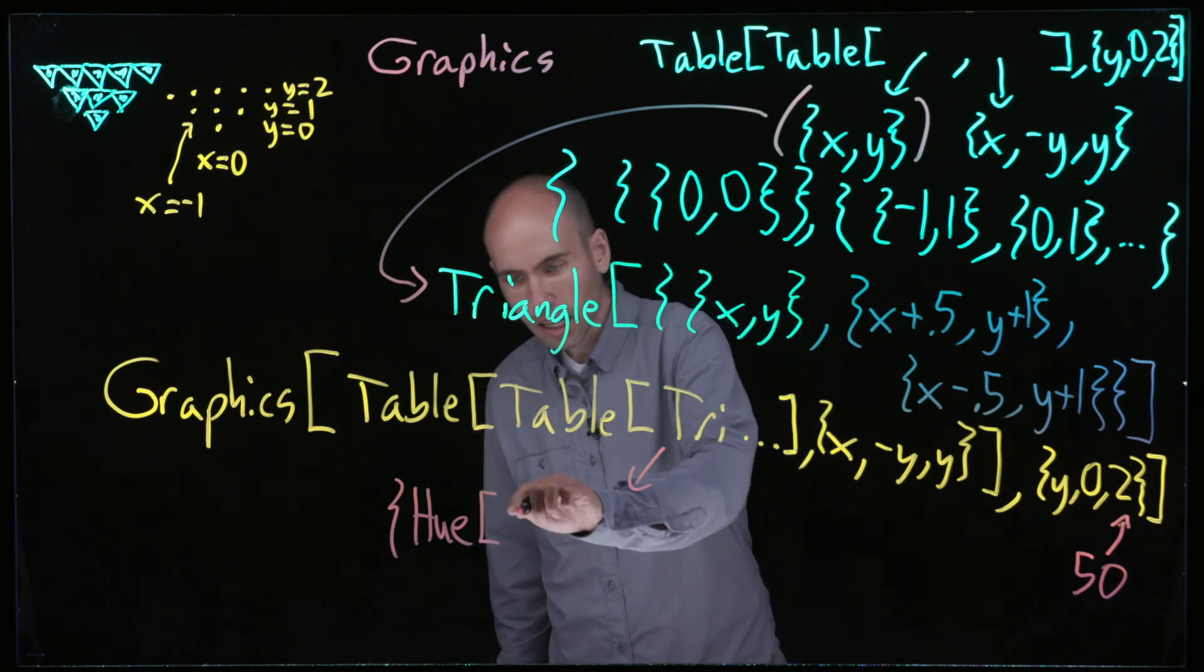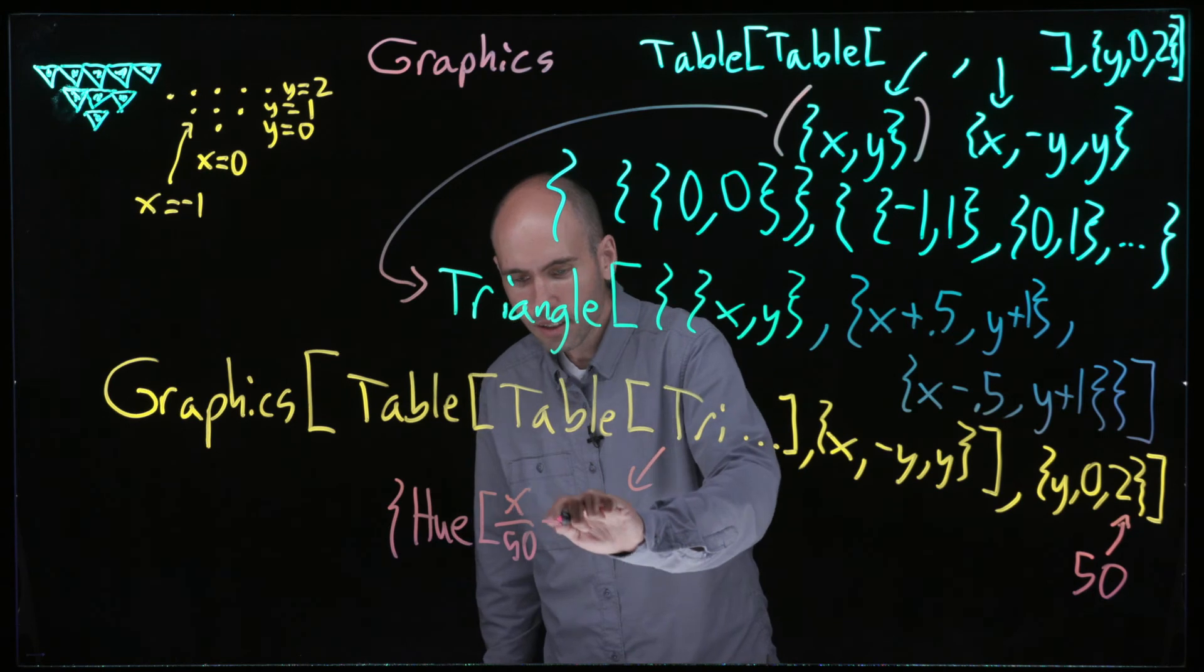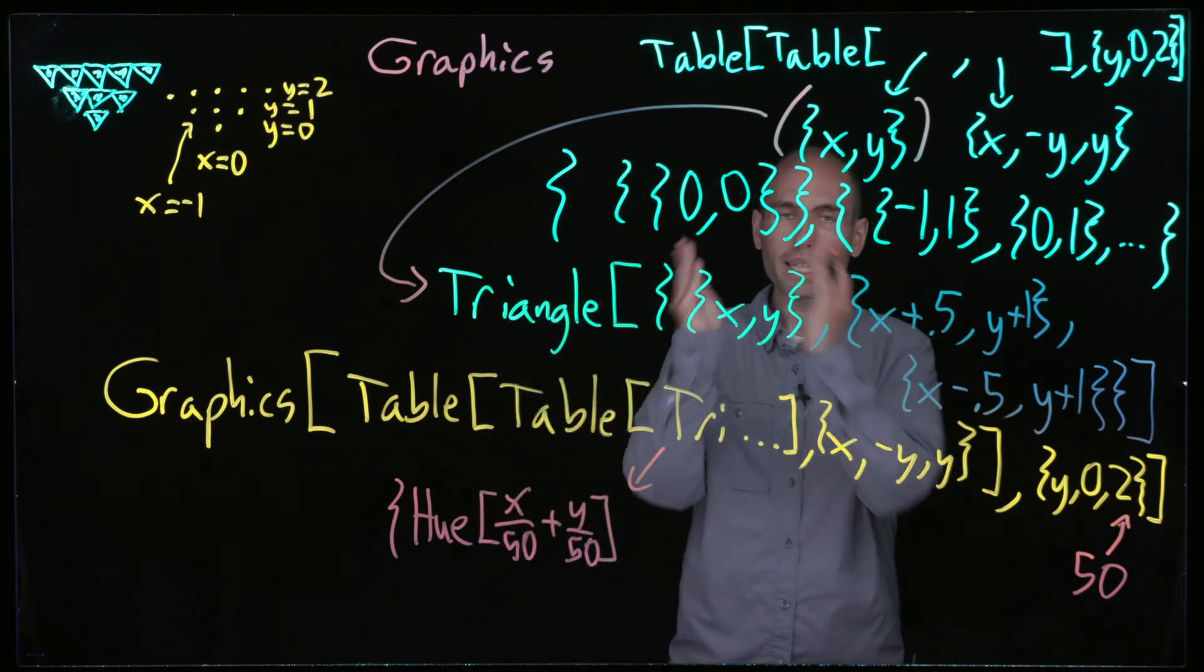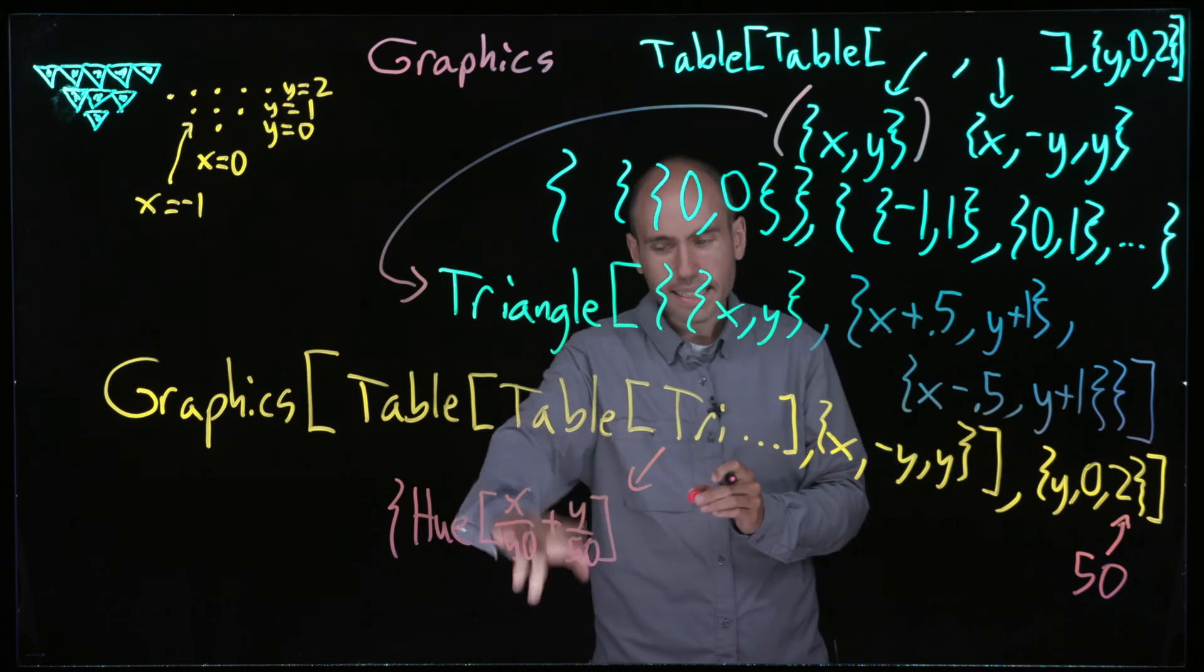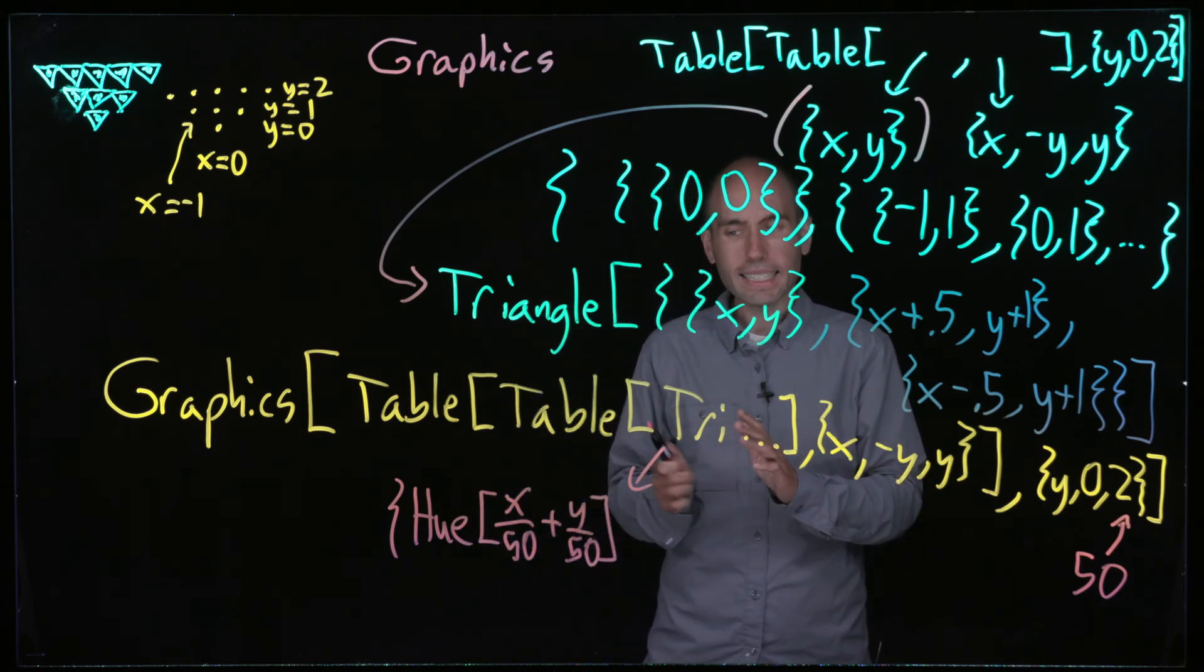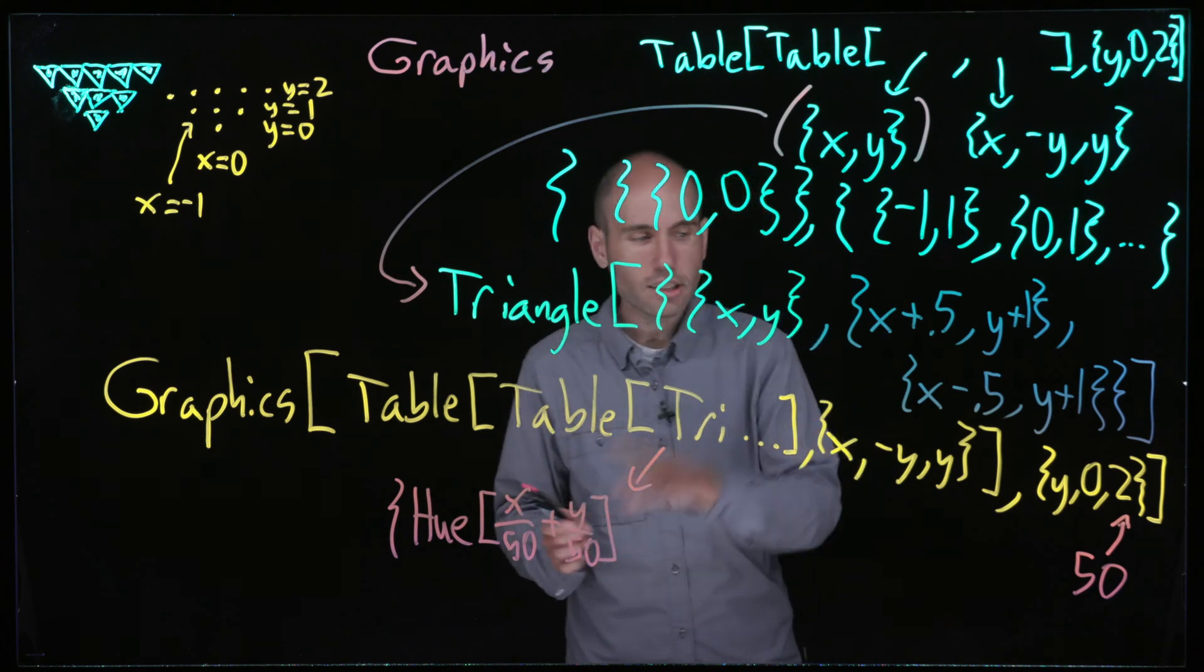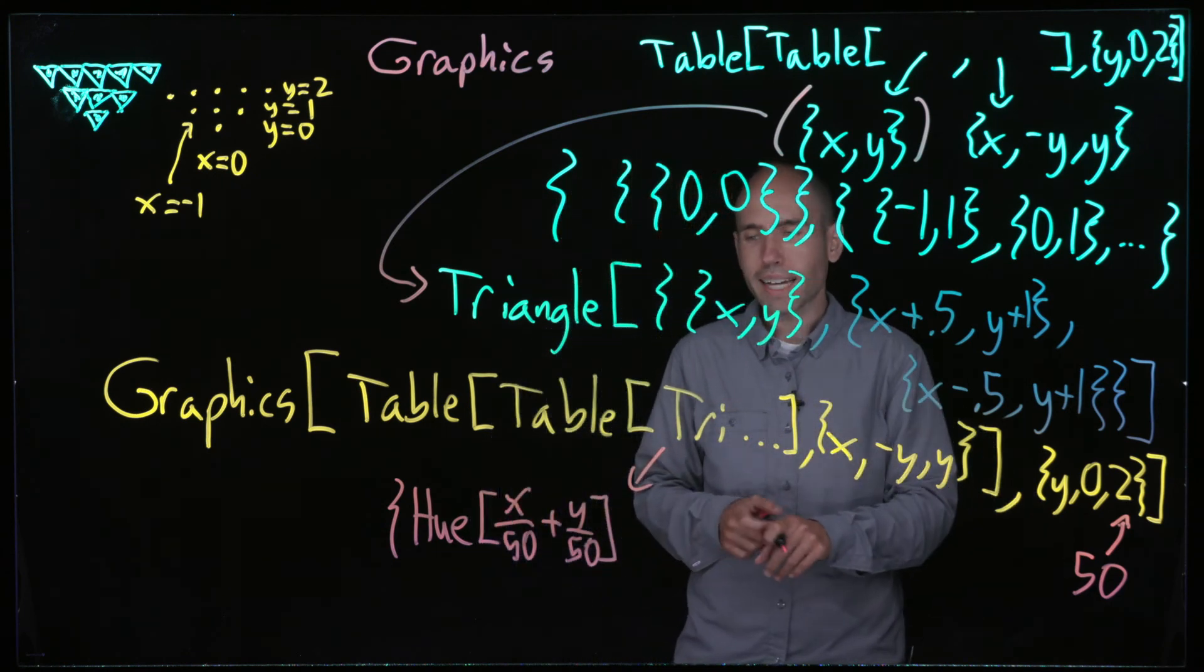If you want to make it really interesting, you could replace this triangle with something like hue. This is telling it what color to use. I could do something like hue of x over 50 plus y over 50. I don't want it to be a big integer because every integer looks the same when I plug it into hue. I want this to be some decimal. For example, hue of 2.7 is the exact same as hue of 0.7, so that's why I'm trying to shrink this so that it's not just a bunch of integers but actually has some decimal parts. That's why I'm dividing by this 50.